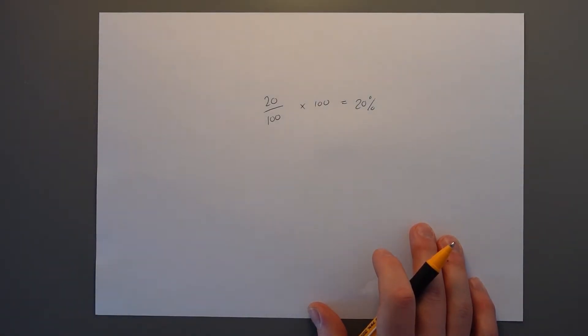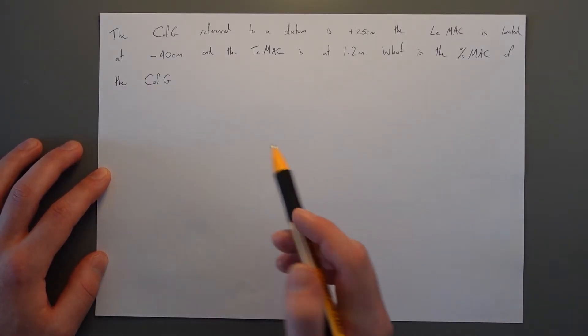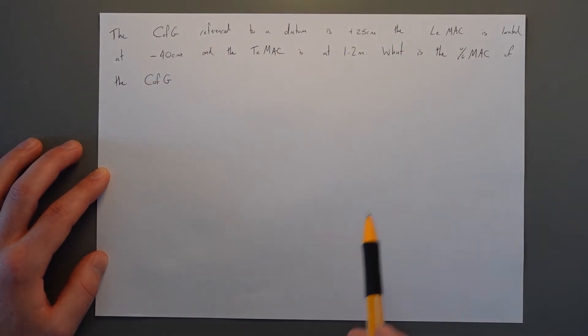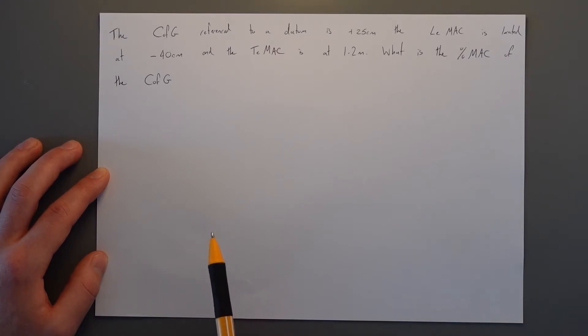So we'll do a quick example just to show what we're talking about. This is our example. The centre of gravity referenced to a datum is plus 25 centimetres, the leading edge MAC is located at minus 40 and the trailing edge MAC is at 1.2 metres. What is the percentage MAC of the centre of gravity?